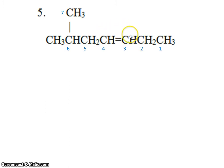But when we write the name, we write it as if it's attached to the lowest number, which is carbon number 3. So the parent chain that has seven carbons in it is called pentane. But because it's a double bond, we have to call it pentene. And we also have to say where the double bond is, and it's on carbon number 3.